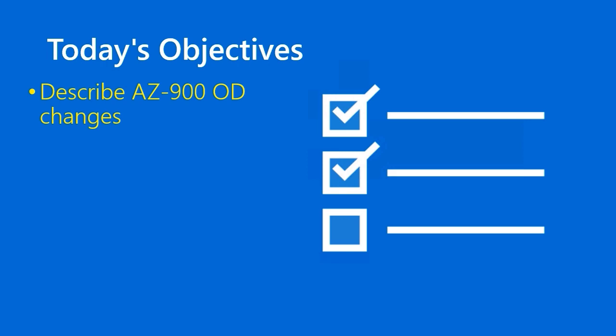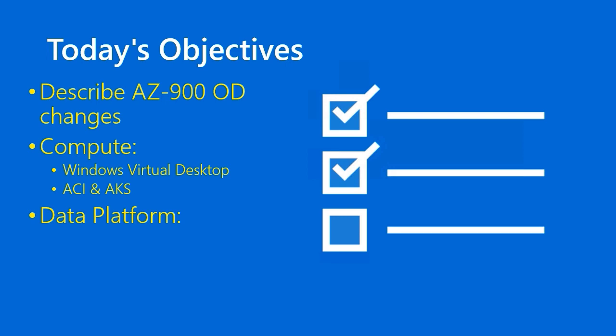I was as surprised as anybody else to go to the AZ-900 exam page and look at the objective domain and see how dramatically different it is. That's part of the nature of the ever-shifting sands of Microsoft Azure in general, and Microsoft Azure role-based certification in particular. We then need to catch up on new content from the compute area: Windows Virtual Desktop, Docker container products ACI and AKS, and for the data platform, differentiate Azure Database for MySQL and Azure Database for PostgreSQL.